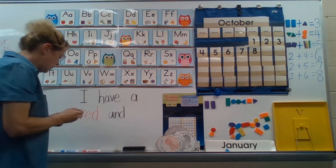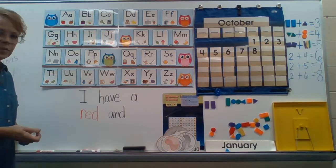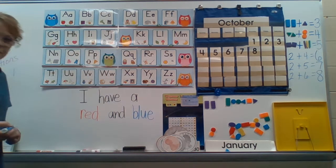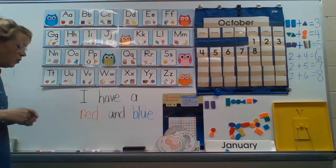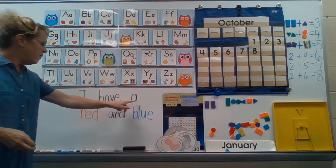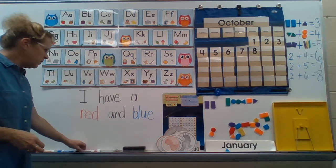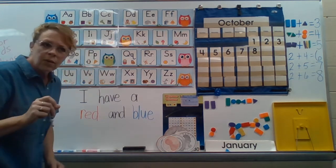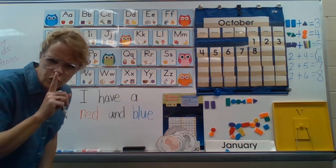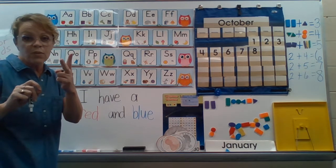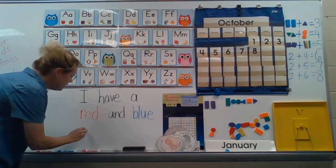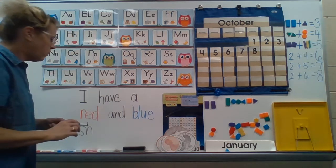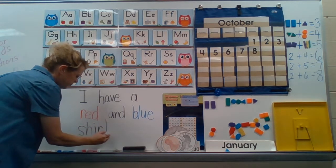Here's my next color word. You tell me what it says. It says, B, L, U, E, blue. Blue, I have A, red, and blue, and I said, shirt. I hear that, shh, like if you tell someone to shh. What letter makes shh? Well, it's not just one letter. It's two letters together that make that shh sound. And it's these two letters, S and H. When you put S, H together, it makes that shh sound.